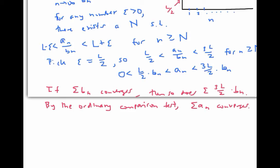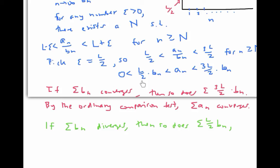Furthermore, if the sum of the b sub n's diverges, then we can focus on this part of the inequality. We know that L over two times b sub n diverges also. And so here we have the a sub n's are bigger than the terms of a divergent series, so the sum of the a sub n's must diverge, just using the ordinary comparison test.